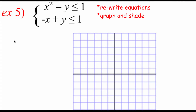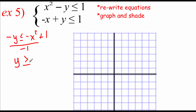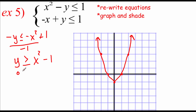In this example, we're going to have to rewrite our equations before we can graph and shade. Starting with the top one, I'm going to subtract the x squared to the right-hand side: negative y is less than or equal to negative x squared plus one. Dividing everything by negative one and flipping the inequality symbol, we get y is greater than or equal to x squared minus one — a parabola shifted down one space. Sketching this in red, with test point zero, zero: zero is greater than or equal to zero squared minus one — that's a true statement — so we shade above the parabola.